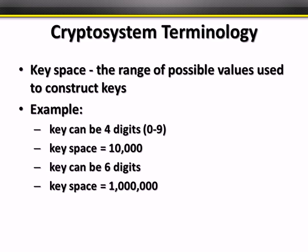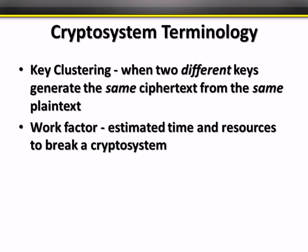Key space is the range of possible keys we could have. For example, a four-digit ATM PIN gives ten possible digits in each of four places, creating a key space of ten thousand keys. Six digits expands that to a million. Key clustering is when two different keys generate the same ciphertext from the same plain text — we don't want this, because it means someone else can decrypt your information.